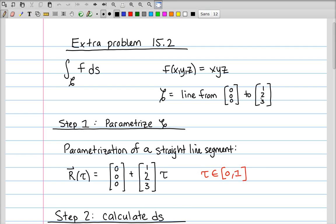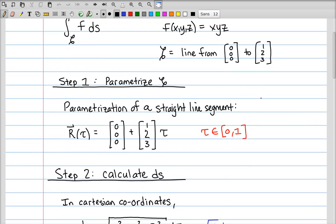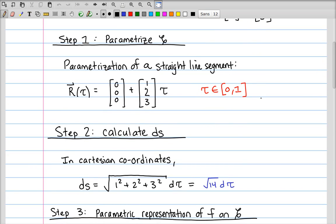So these problems can all be broken down into three steps. The first step is to parametrize the curve. So it's a straight line between (0,0,0) and (1,2,3), and we saw in the notes that this can be parametrized by a vector function r(t) equals (0,0,0), the initial point, plus the final point minus the initial point times tau.